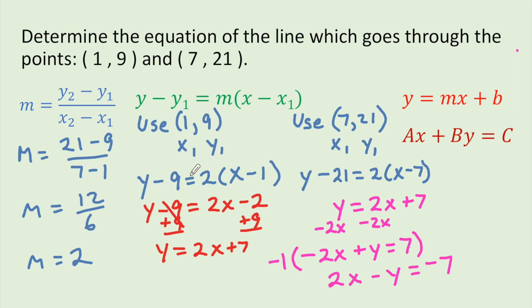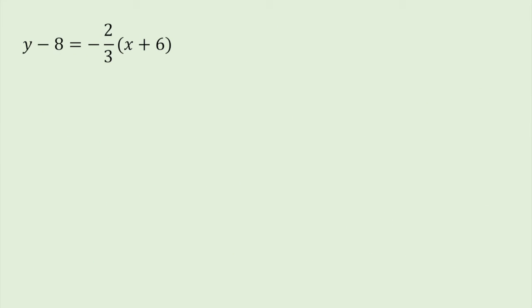So, to summarize: we have point-slope form, point-slope form using the second point, slope-intercept form, and standard form. Next problem.